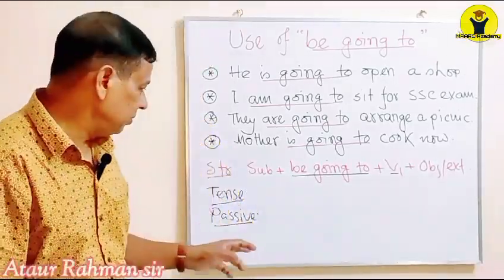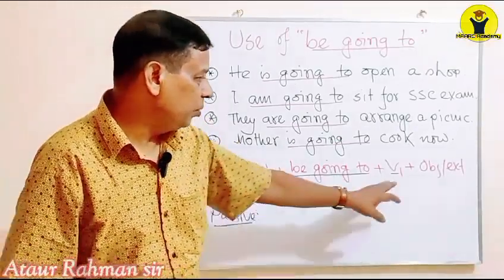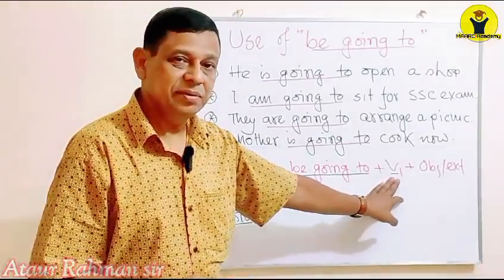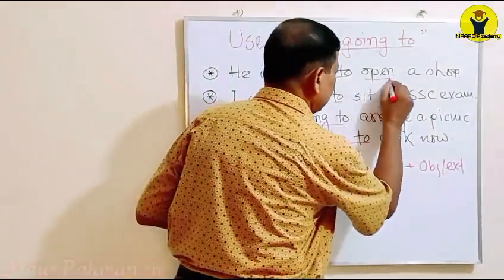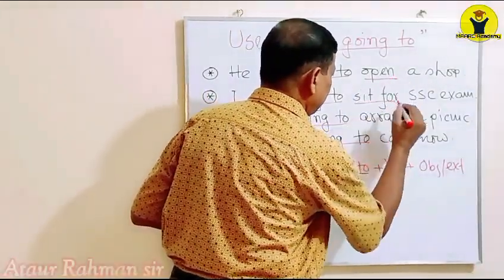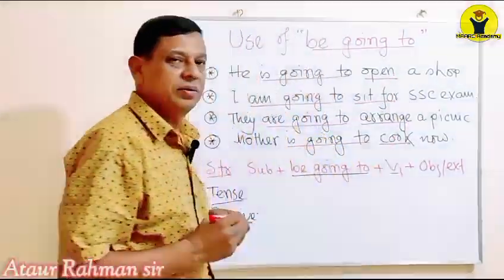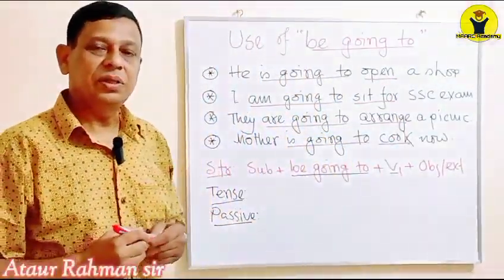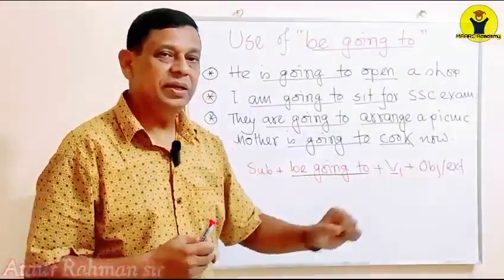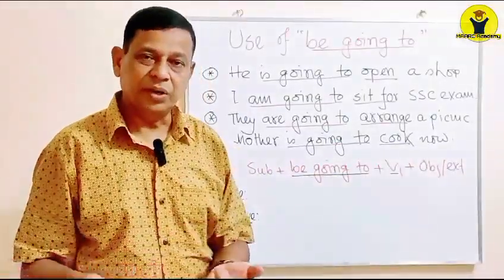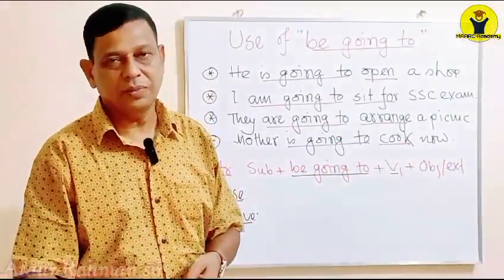And the structure is here: Subject + be going to + V1. You see, V1 — all these verbs are V1 (base form). Subject + be going to + V1, and then an object or extension may be there.